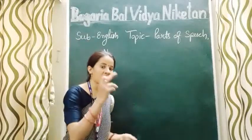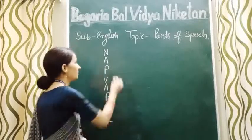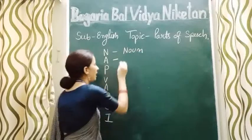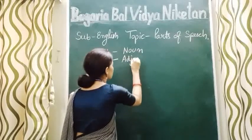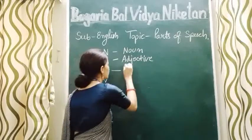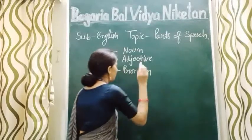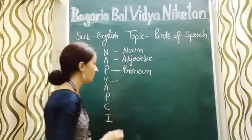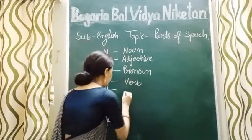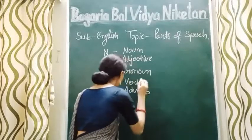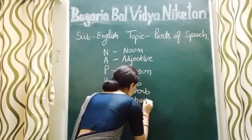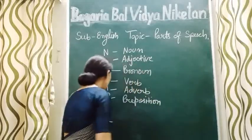Now you will think what is this? It's an easy formula for learning all the names of parts of speech. N for noun, A for adjective, P for pronoun, V for verb, A for adverb, P for preposition, C for conjunction.